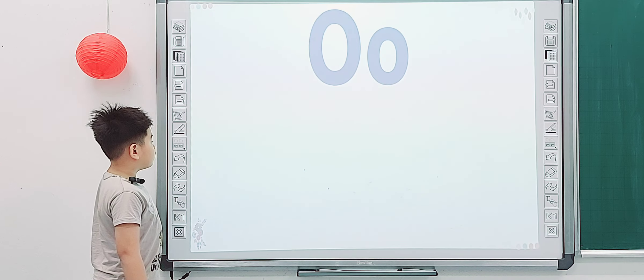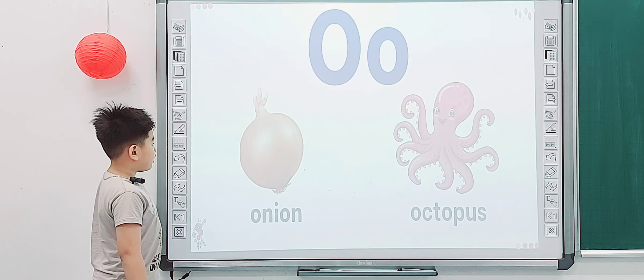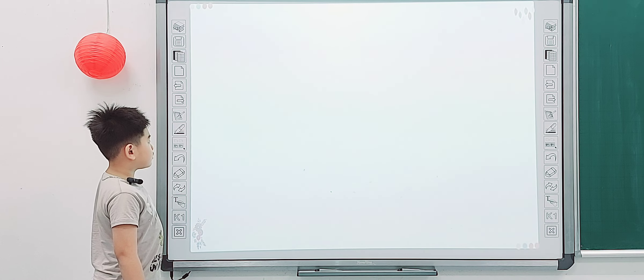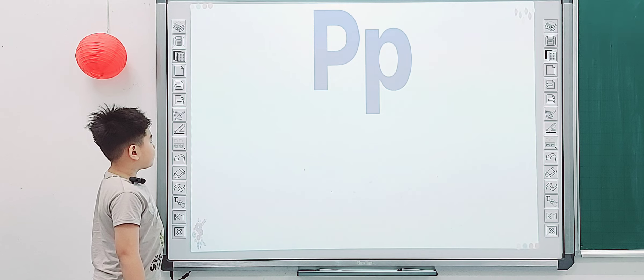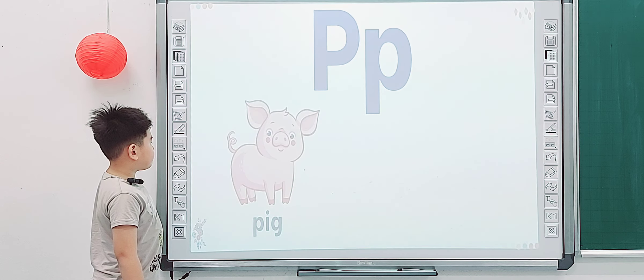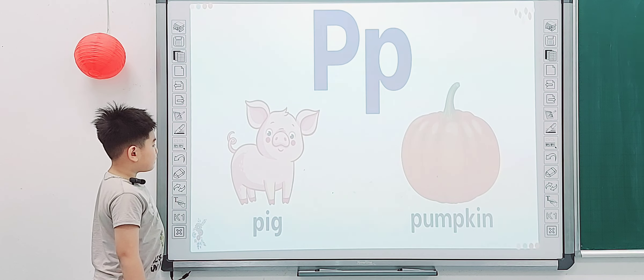Next one. O. Orange. Orange. Good, next one. What is it? P. P is for? Pink. Pink and? Pumpkin.